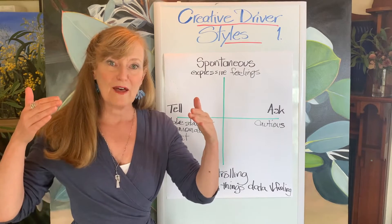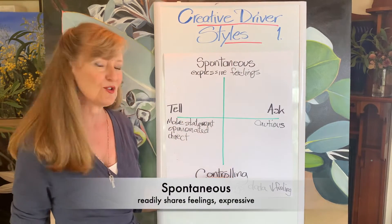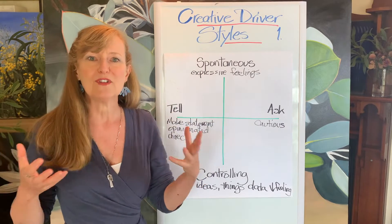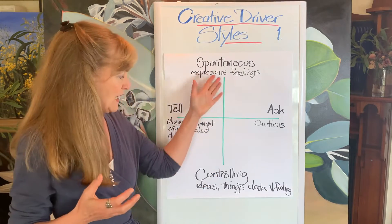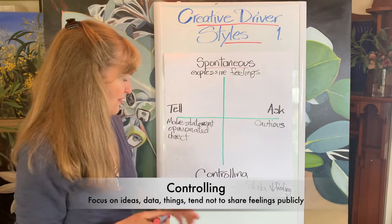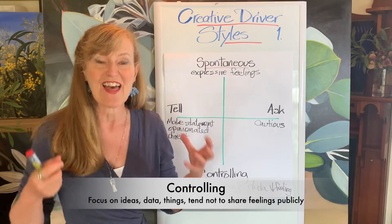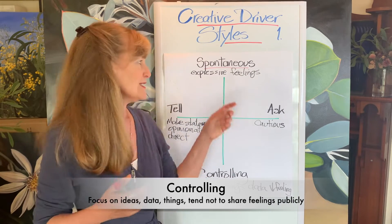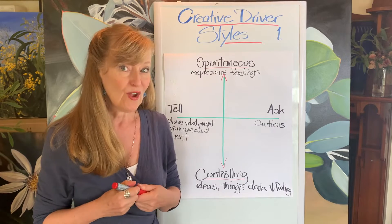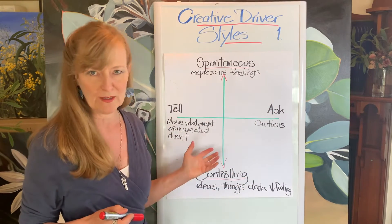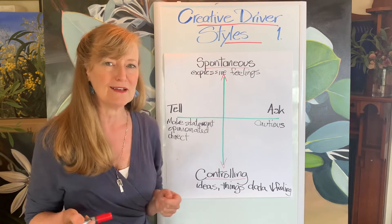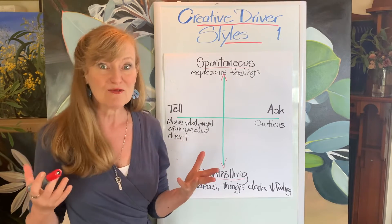From last week, I talked about the axes — from spontaneous to controlling. Spontaneous describes those who express feelings openly; that's what's really driving and important to them. At the other end of that continuum is controlling, meaning people who are into ideas and things — that's what excites and stimulates them. We're all going to sit somewhere on that continuum. In the third video I'll explain how we might shift between these quadrants.